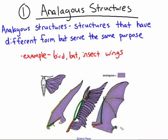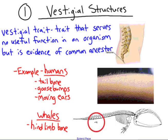This is the opposite of analogous structures. Analogous structures are exactly the opposite of homologous — they are structures that have a different form but serve the same purpose. For example, with wings: the bat wing, the bird wing, and the insect wing don't have the same bones, unlike the previous example, but each of these wings serves the same purpose, which is flying.